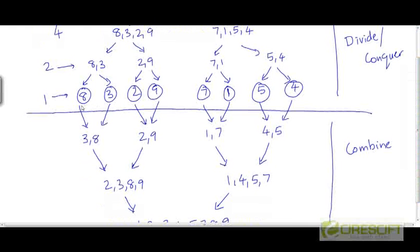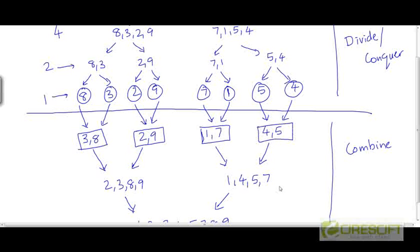When we combine these two subproblems, treating 8 and 3 as singleton arrays and merging them together, we are going to end up with 3, 8. Likewise, when we merge these two sorted arrays together, we will have an array of size 2: 2, 9. This will also be an array of size 2 with elements 1 and 7 when we merge those two. And when we merge together 5 and 4, we will get 4, 5. So these are the answers to the subproblems here.